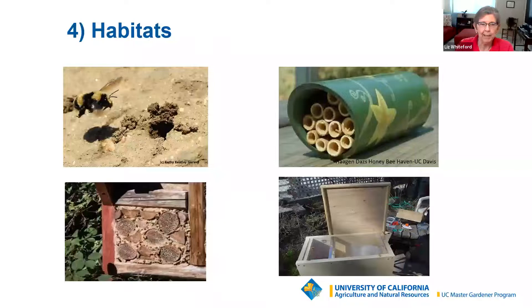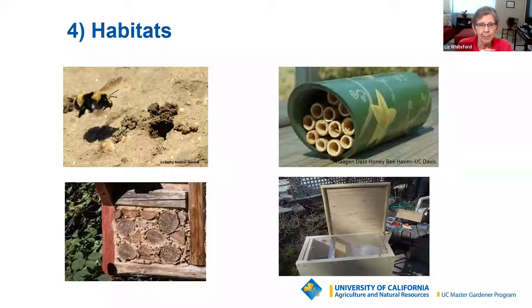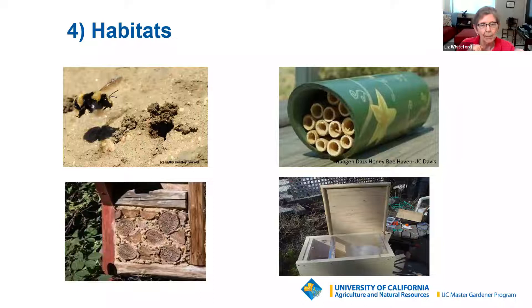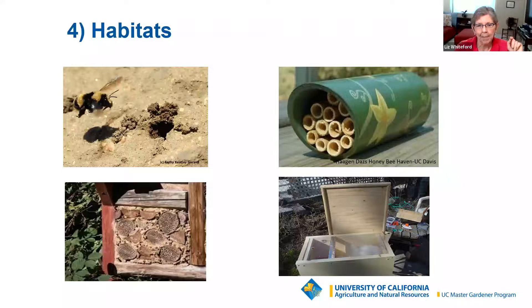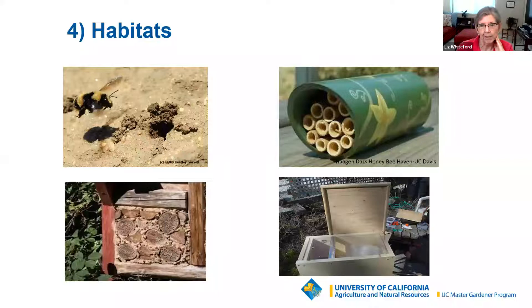We can also provide habitats. I can't really provide a habitat for a digger bee, but instead of covering every piece of ground with mulch, I could leave an area free for native bees that nest in the ground to make their tunnels. Empty bamboo rods work well. Rotted branches drilled with holes allow a bee to come find a crevice and lay her eggs inside. If you were to buy a bumblebee box, it would contain dry moss, grass clippings, shredded paper, or cotton batting. Bumblebees try to find a hole in the ground — perhaps one a rodent dug — and make it their colony.